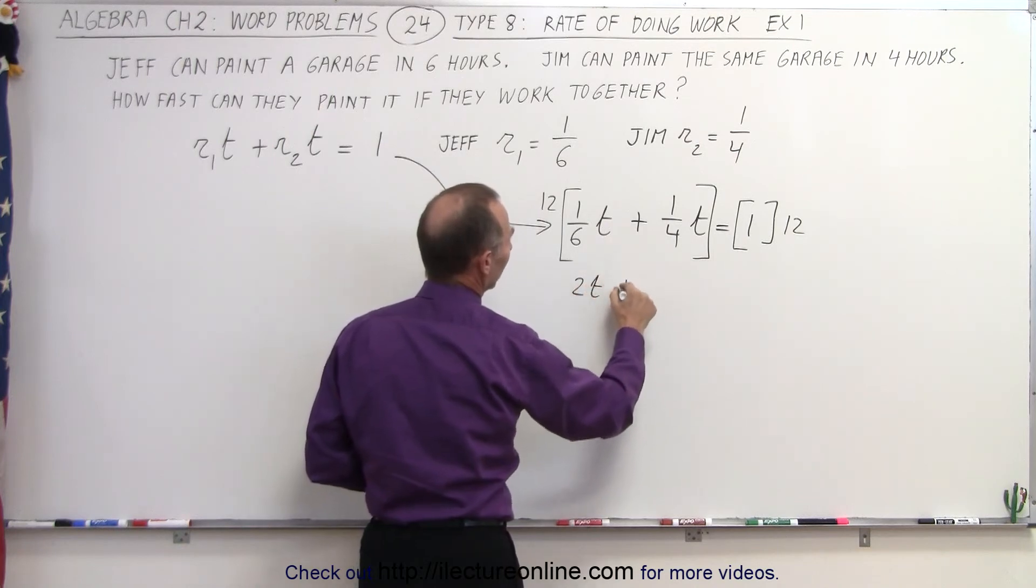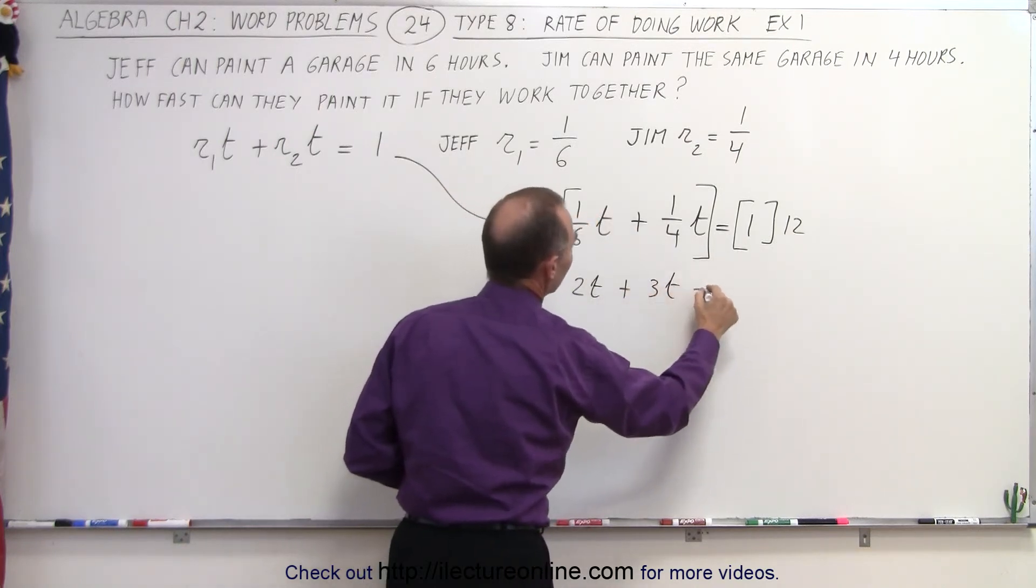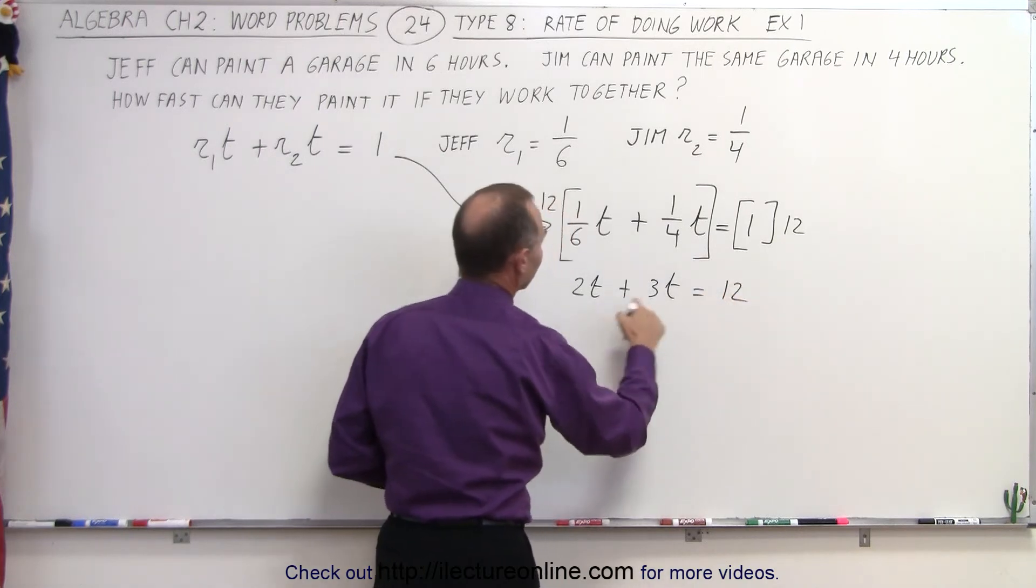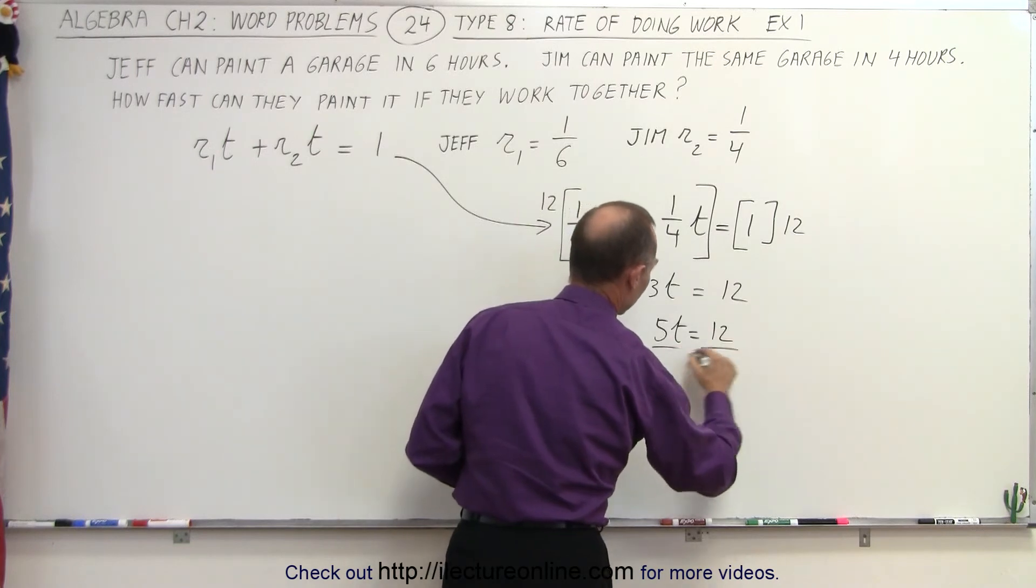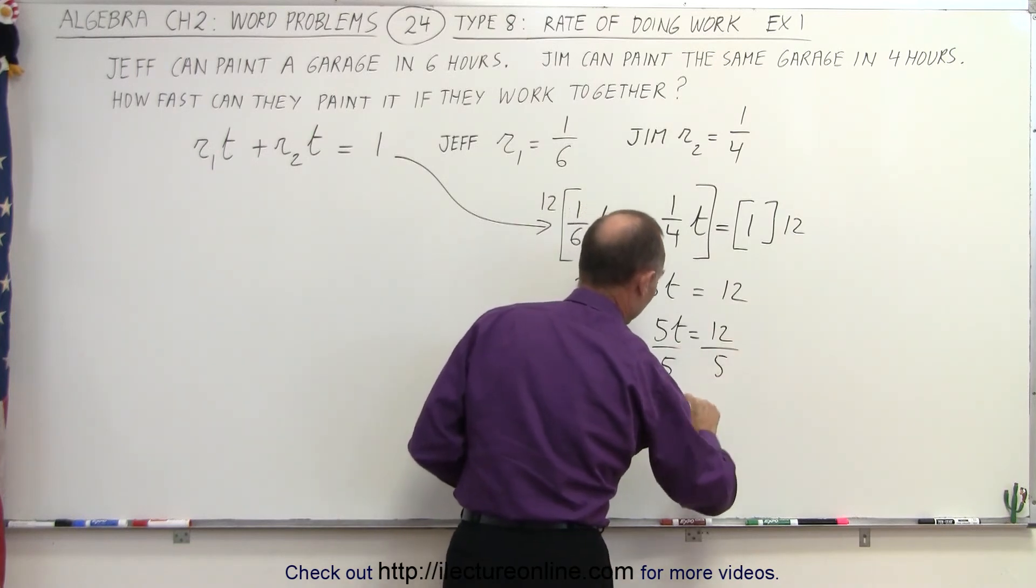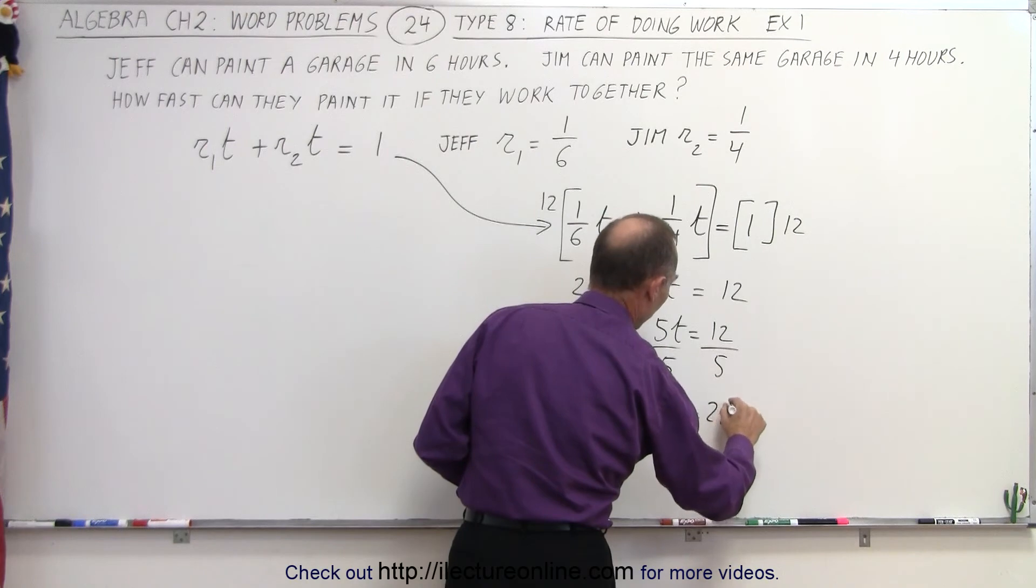When we do that, six goes into 12 two times, so that gives us 2t, plus four goes into 12 three times, so we write 3t is equal to 12. Add these together, we get 5t is equal to 12. Or when we divide both sides by 5, we get t is equal to 2.4.